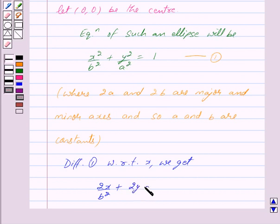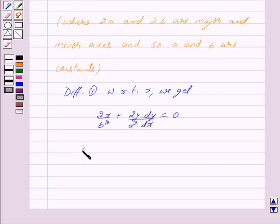Differentiating x² / b² we get 2x / b² plus differentiating y² / a² we get 2y (dy/dx) / a² = 0. Or we can write this as 2y / a² times y' = -2x / b²